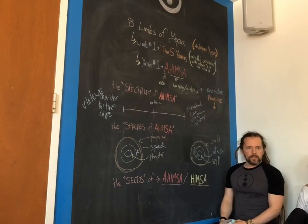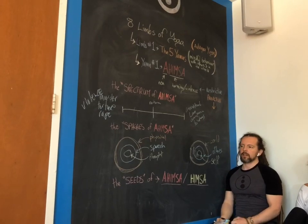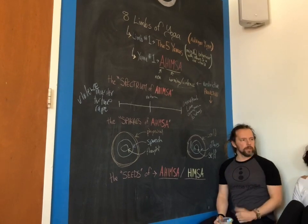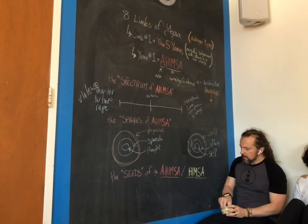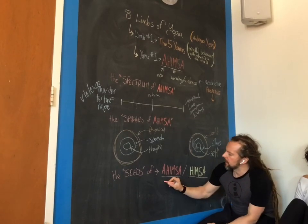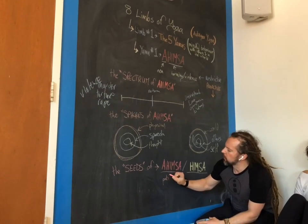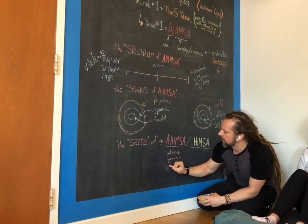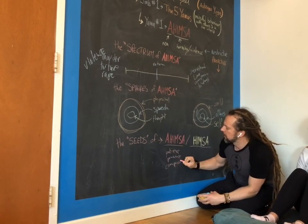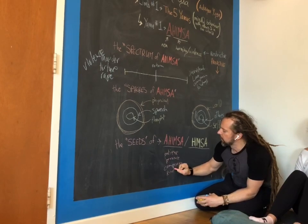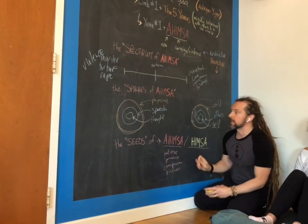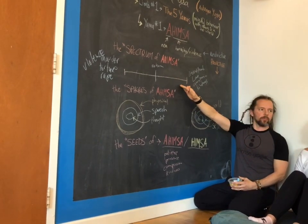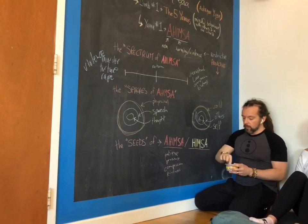All these things come from certain seeds that we plant. It's not just a matter of, I'm not going to hit somebody. There are things that create the conditions in which those things happen. Seeds of ahimsa are things like patience. When you practice patience, it gets easier. Presence. When you're really present, then that makes a big difference. It's compassion, kindness. Those things, when you actually practice those things, they create an environment in which all this stuff gets a little easier. And the things that we do end up a little bit more on this spectrum.